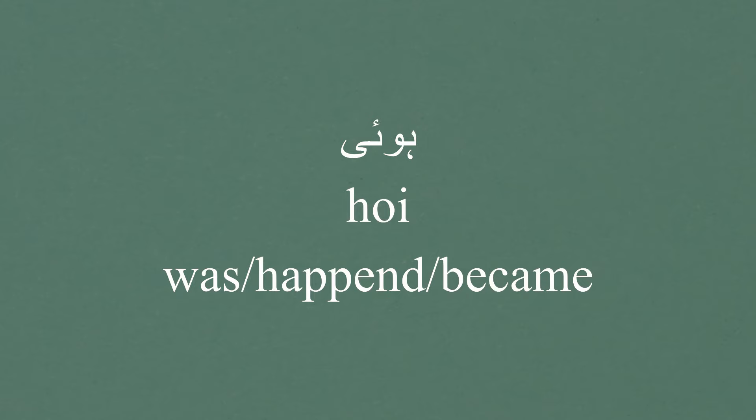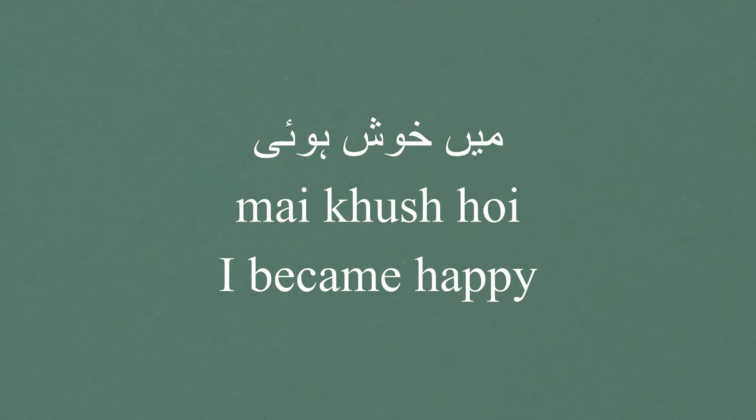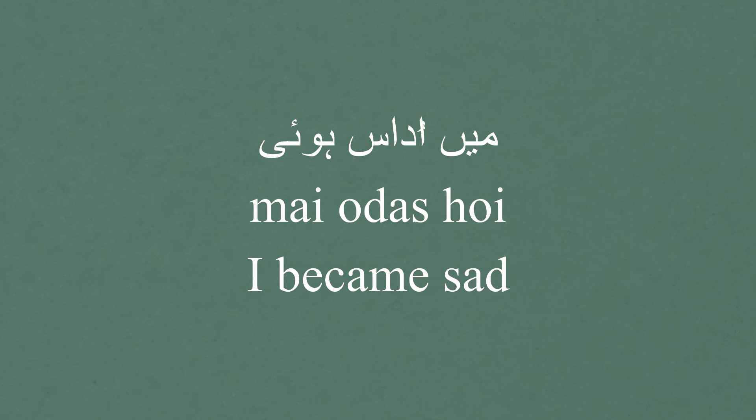'Ho' is the verbal stem. Adding the suffix 'i' gives us 'hui' — happened. 'Main khush hui' — I became happy. 'Main udaas hui' — I became sad. 'Main ghamgeen hui' — I became sad/grieved. I hope you won't have to use so many words for sad!